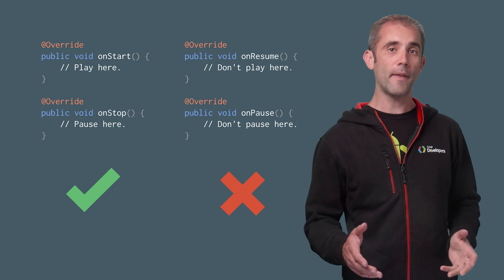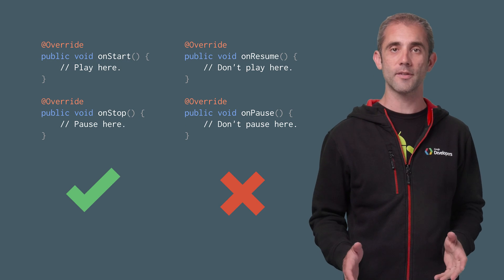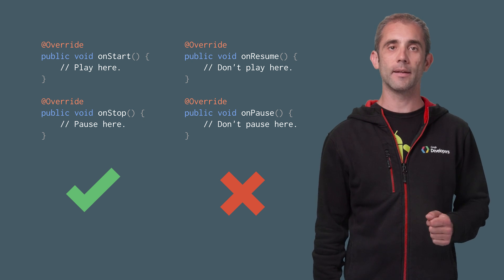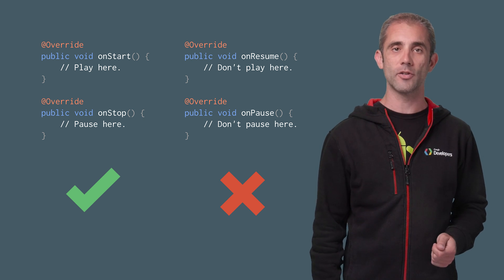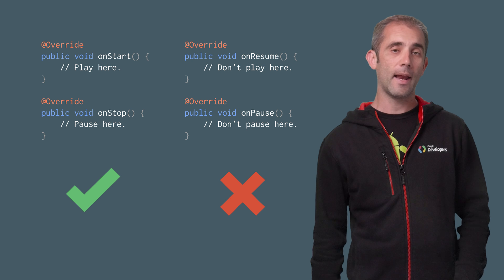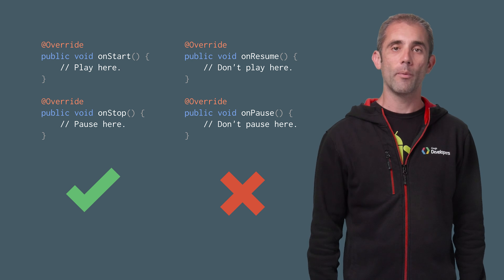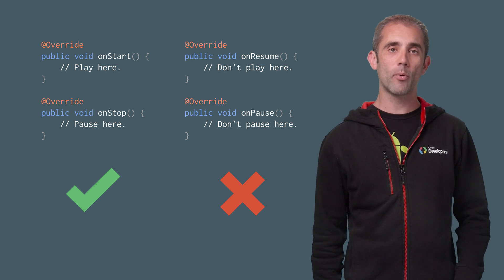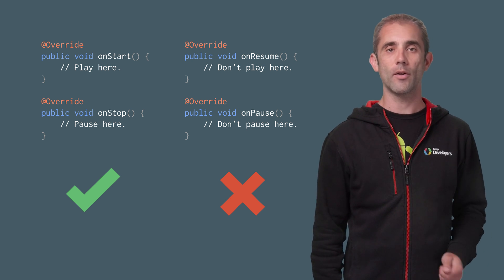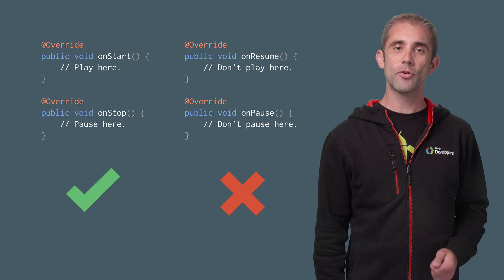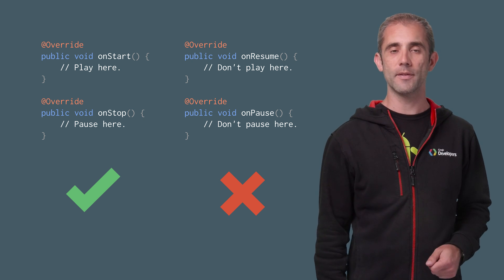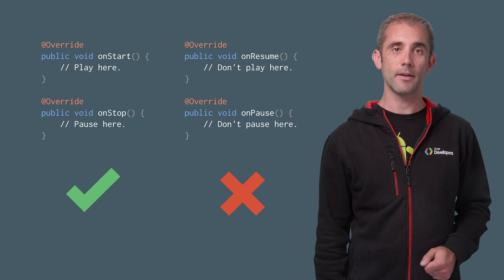If you find that your video pauses when you activate PIP, that's likely because you're handling the play and pause logic in onResume and onPause. In Android N, we recommend your play-pause logic happen in onStart and onStop instead, so be sure to move that logic over to those methods if you encounter that issue.